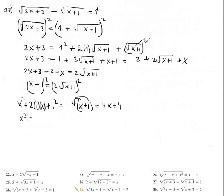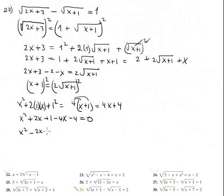We now have a quadratic equation: x plus 1 squared, which is x squared plus 2x plus 1. Rearranging: 2x plus 1 minus 4x minus 4 equals 0, combining like terms gives negative 2x minus 3 equals 0.